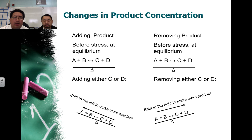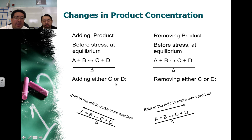We can also do the same thing with product concentration — we can either add product or remove it. We're at equilibrium, so everything's balanced. If we add either C or D, what ends up happening is you end up with an imbalance, and then in order to rebalance itself, we need to shift to the left or make more A and B to establish equilibrium.